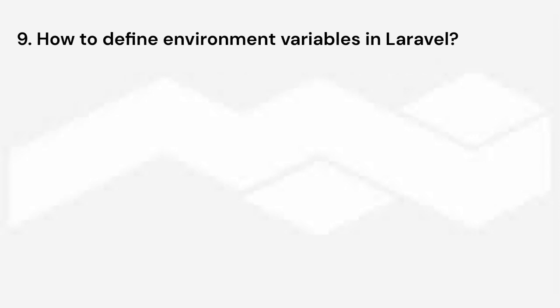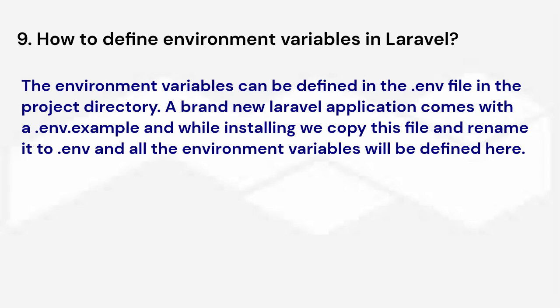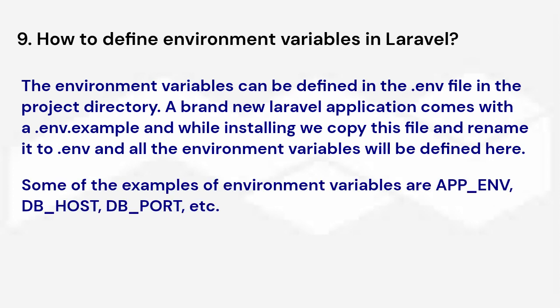How to define environment variables in Laravel? Environment variables can be defined in the .env file in the project directory. A brand new Laravel application comes with a .env.example file, and while installing we copy this file and rename it to .env, where all environment variables will be defined. Some examples of environment variables are APP_ENV, DB_HOST, DB_PORT, etc.